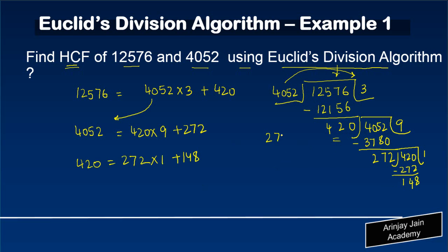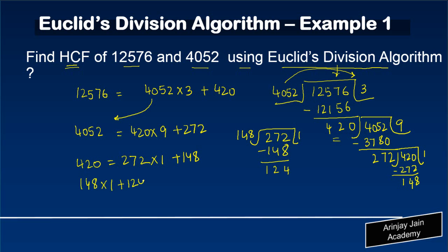Now I divide 272 by 148. It goes one time with a remainder of 124. So we write: 272 = 148 × 1 + 124.